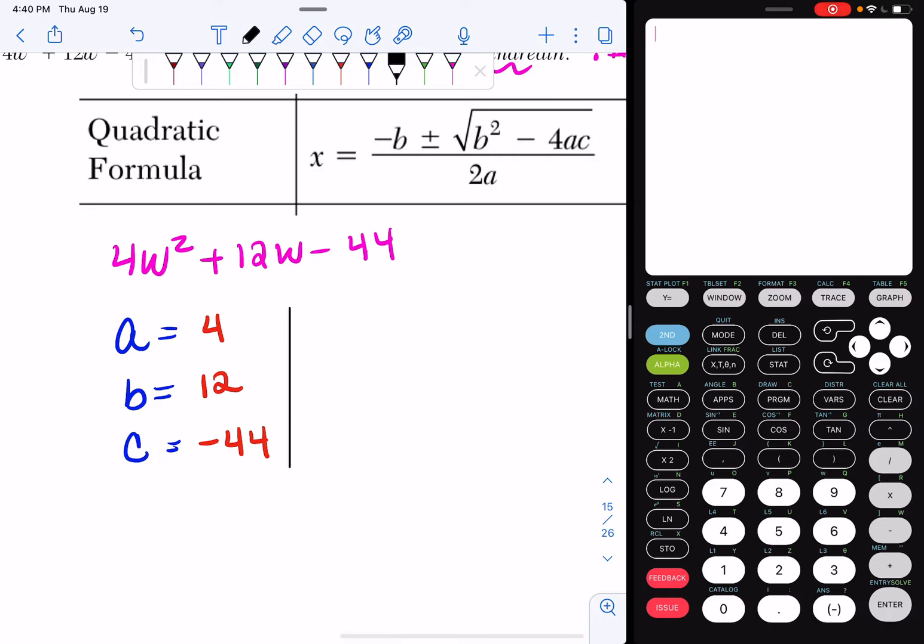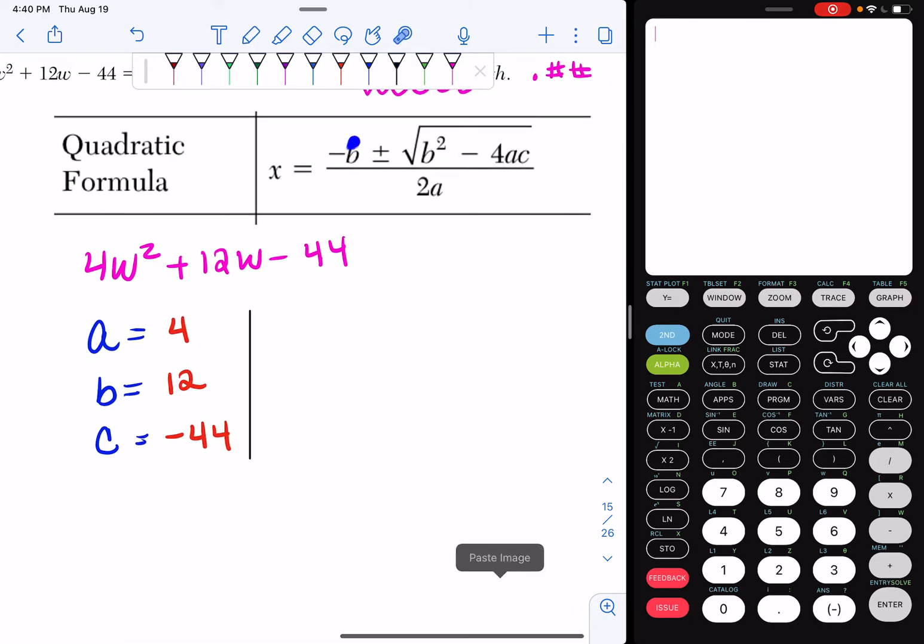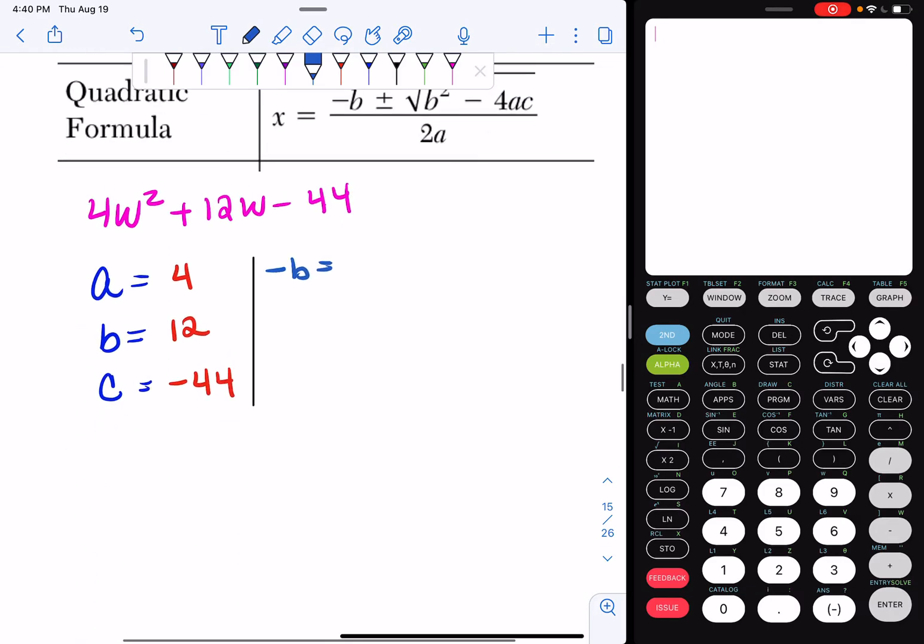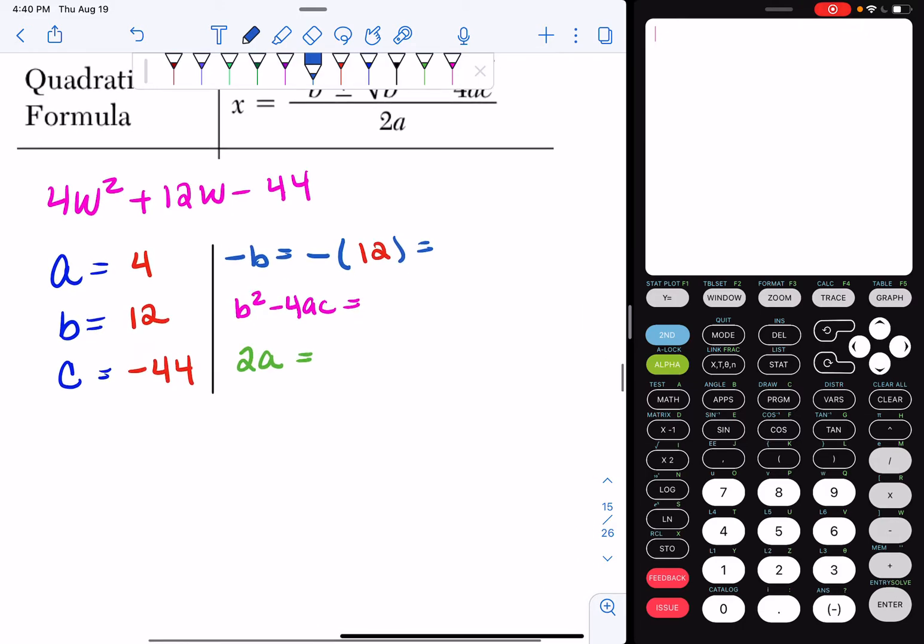Now what we're going to do is we are going to make our substitutions. We are going to find out what negative b is, b squared minus 4ac is, and 2a. So negative b is simply going to be the negative of your b value. If you look, your b value is a 12. So the negative of a 12 is simply negative 12.